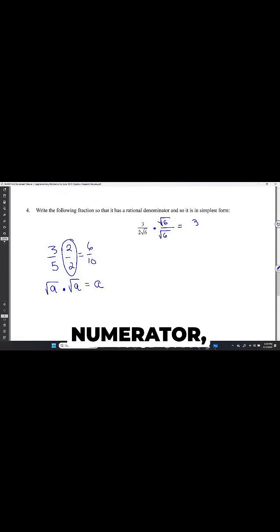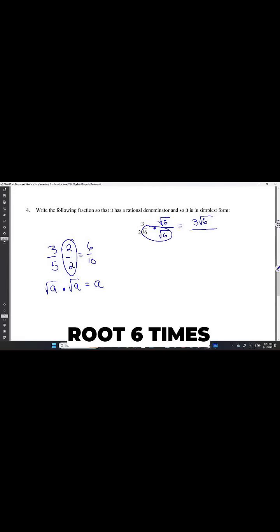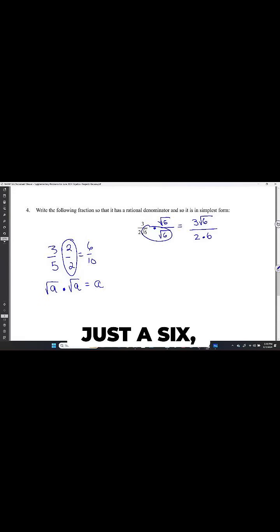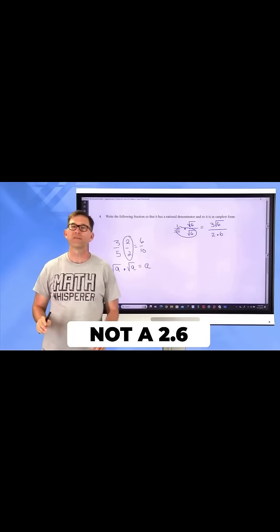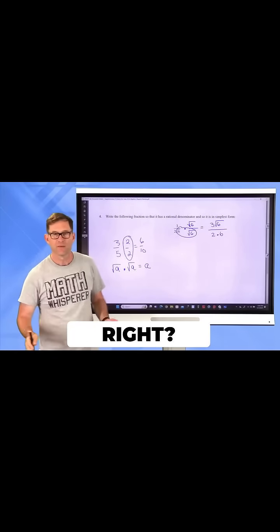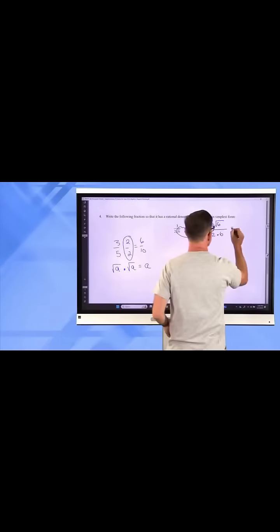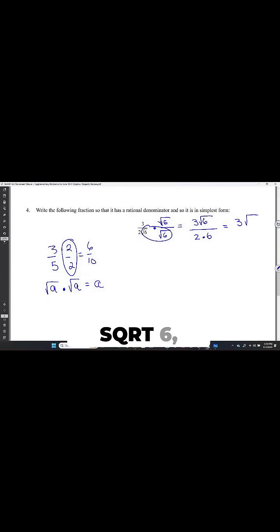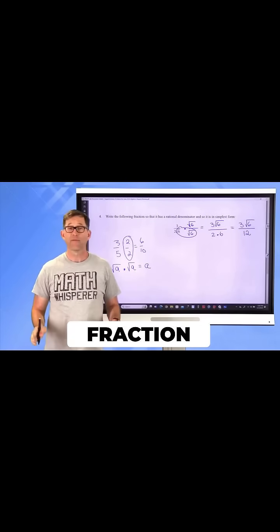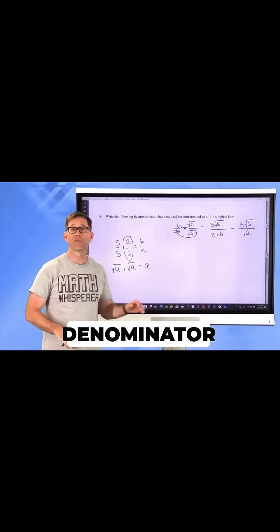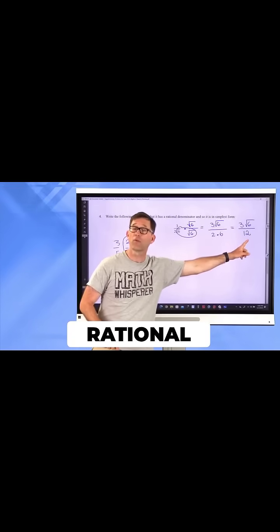Now in the numerator, all I can do is write it as 3 root 6. But the denominator now, I have root 6 times root 6, so that becomes just a 6. Not a 2.6, but 2 times 6. So I now have 3 times the square root of 6 all divided by 12. And that is definitely a fraction that now has a rational denominator because the 12 is a rational number.